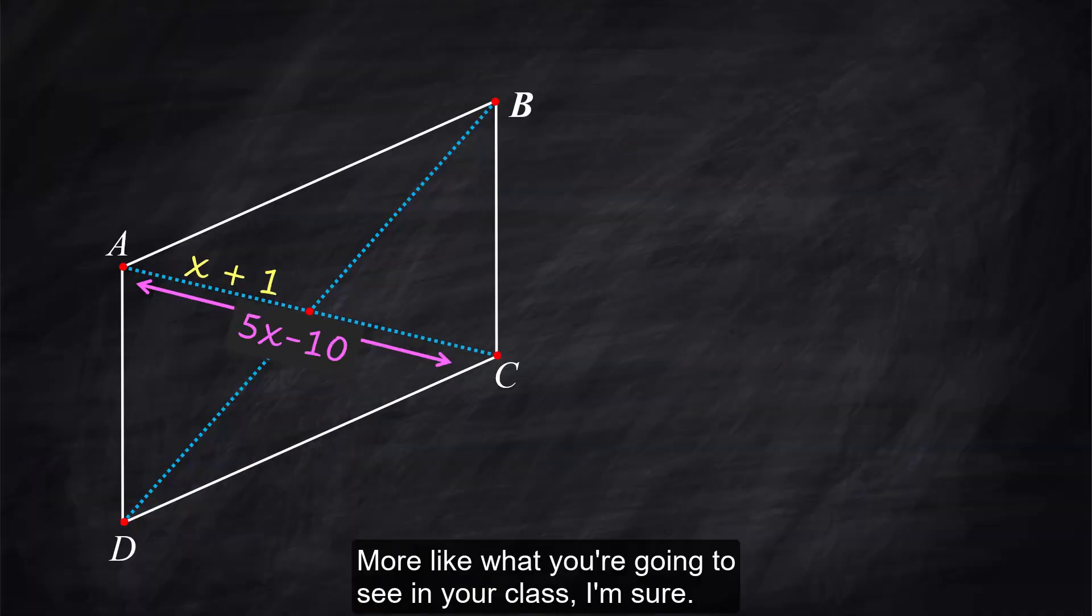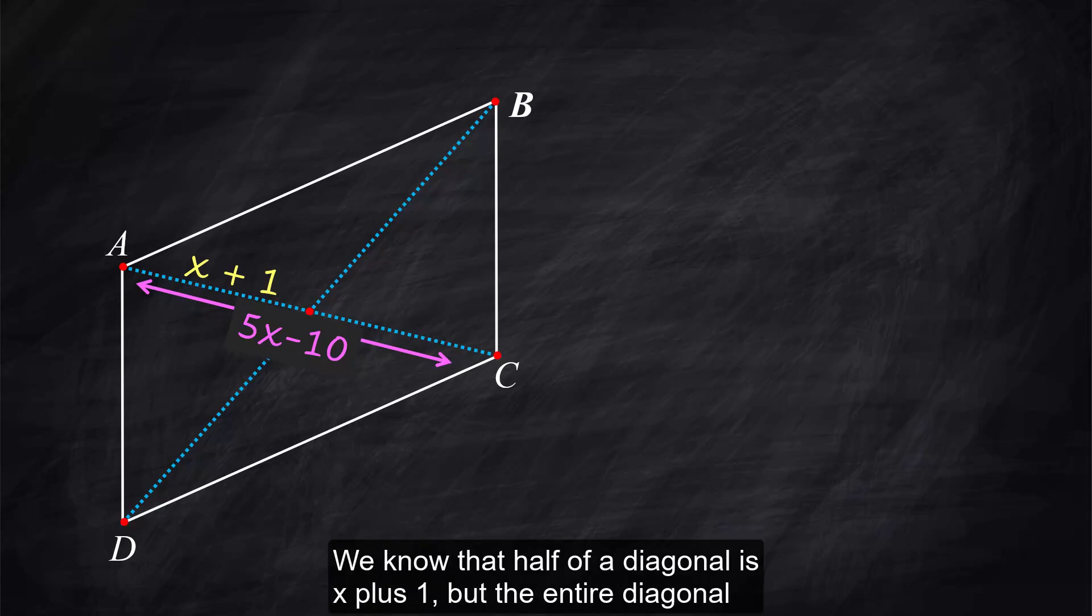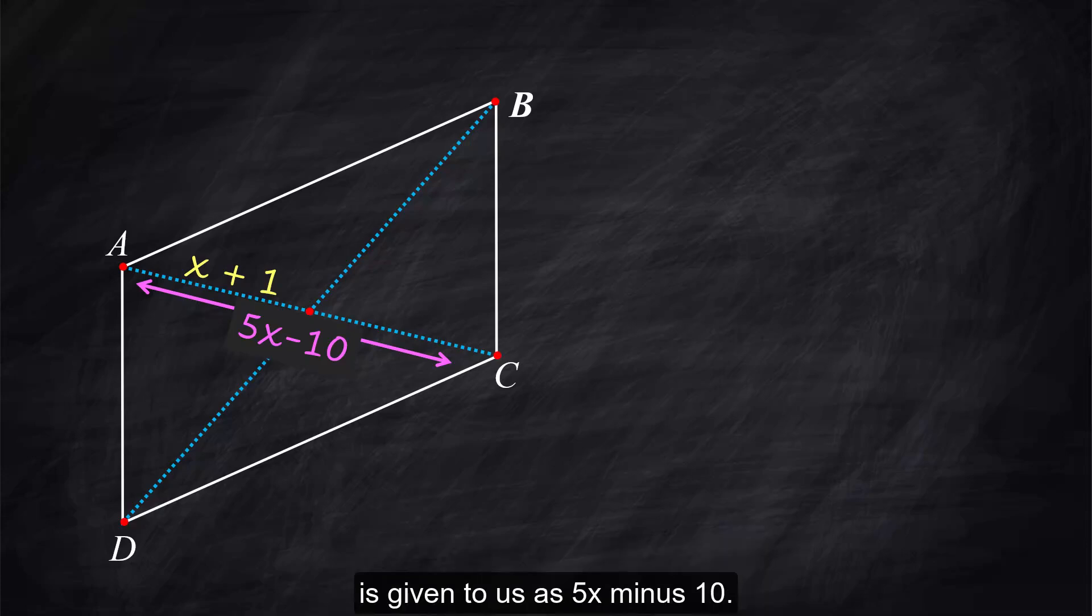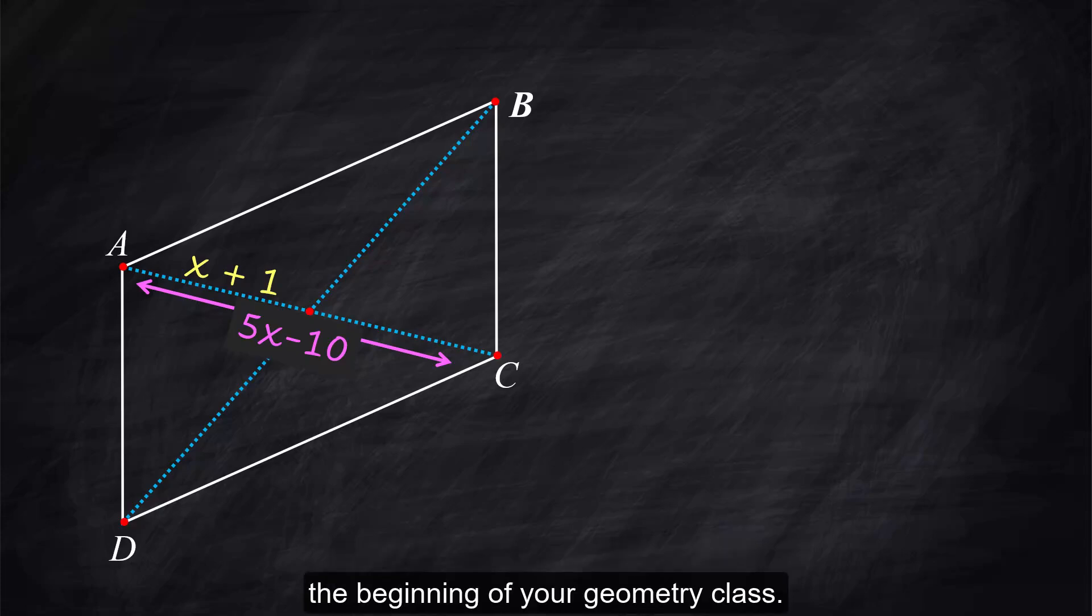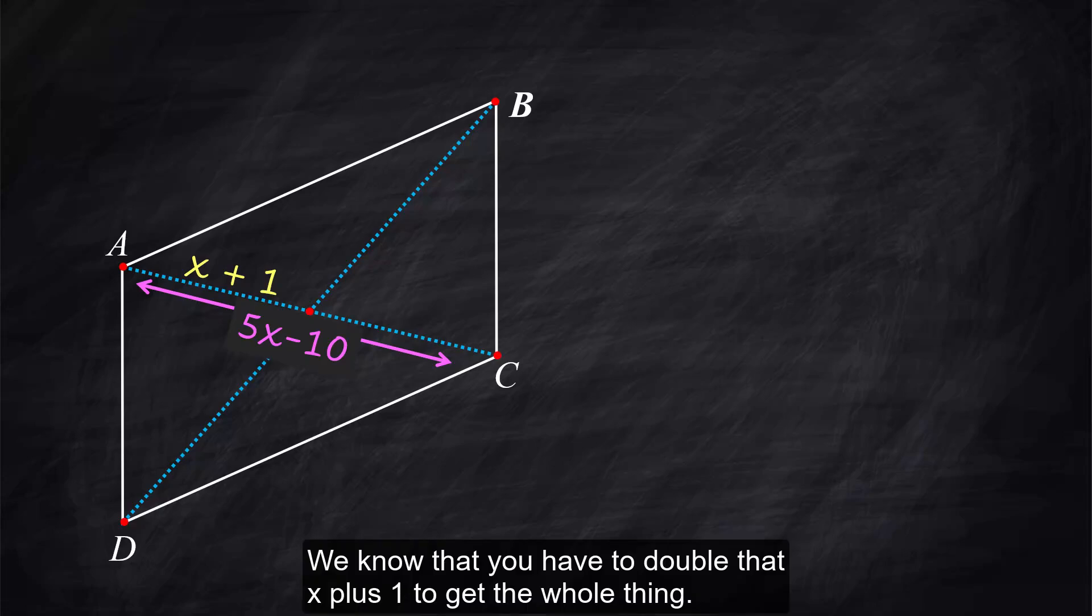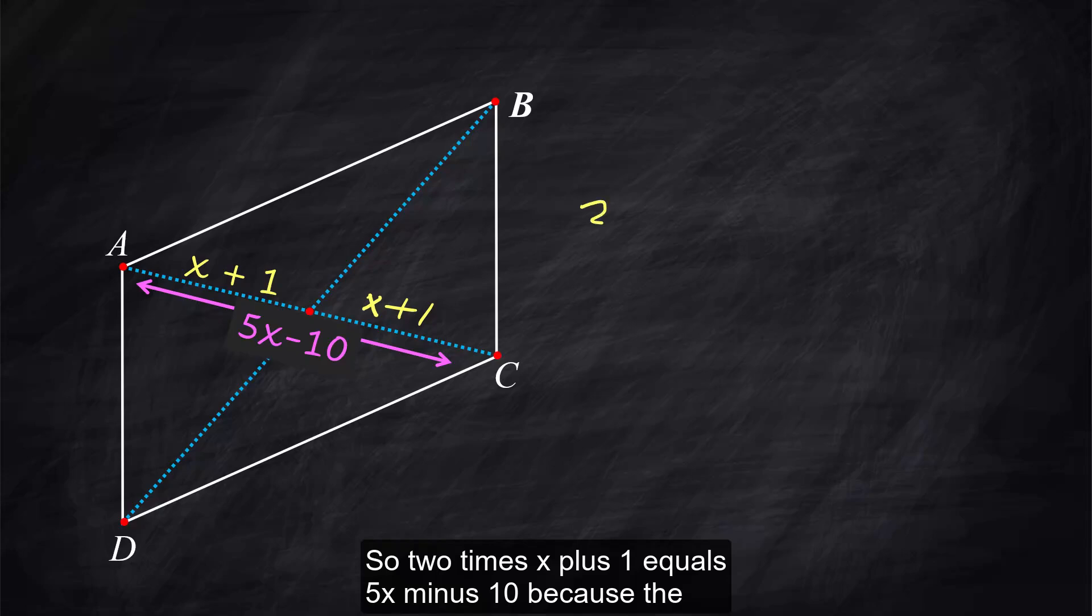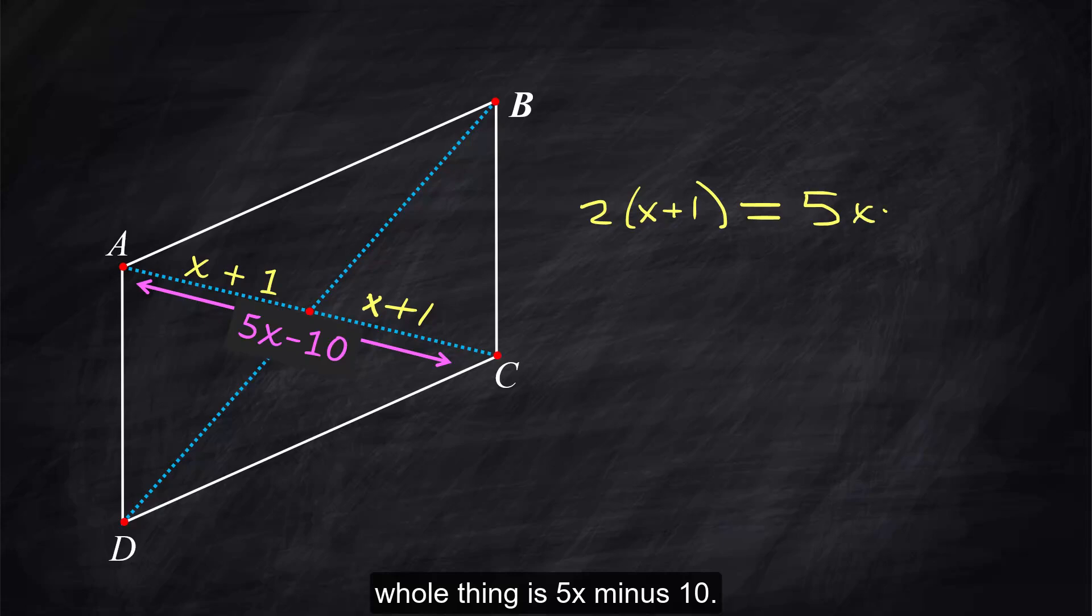This is a fun one more like what you're going to see in your class I'm sure. We know that half of a diagonal is x plus 1 but the entire diagonal is given to us as 5x minus 10. This is a little like segment addition problems that you did at the beginning of your geometry class. We know that you have to double that x plus 1 to get the whole thing so 2 times x plus 1 equals 5x minus 10 because the whole thing is 5x minus 10.